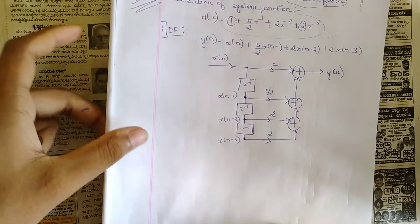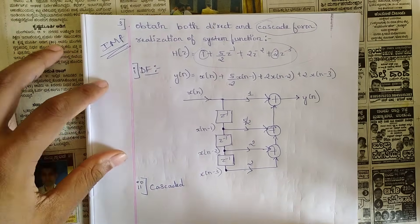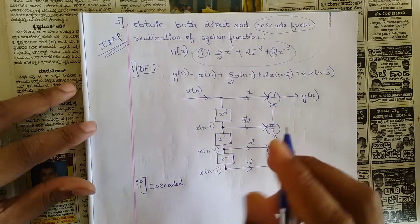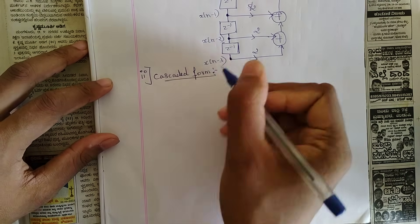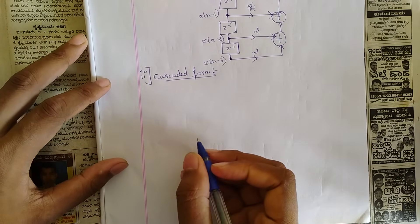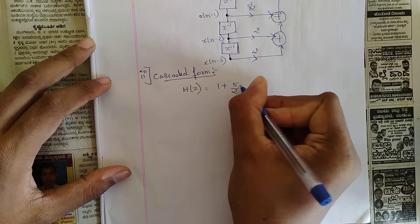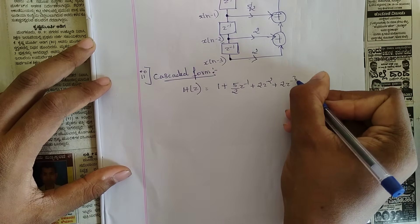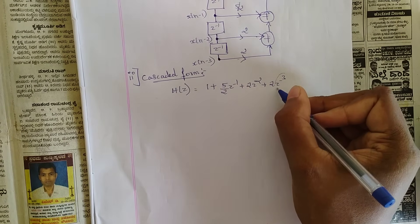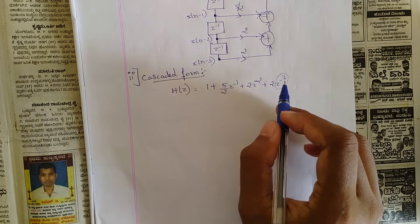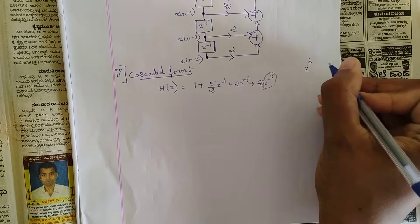Now the complex part — the cascaded form. Sometimes they ask for both direct and cascaded form, or only cascaded form, giving you one complex equation. Write the given equation: H(z) = 1 + (5/2)z⁻¹ + 2z⁻² + 2z⁻³. The first step is to check for the highest degree term, which here is z⁻³.